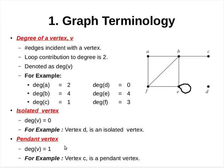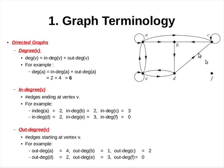The second term associated with the degree of a vertex is pendant vertex. It is a vertex of degree 1. Vertex C in this graph has a degree of 1, so it is called a pendant vertex. Now we shall discuss the graph terminology associated with a directed graph.